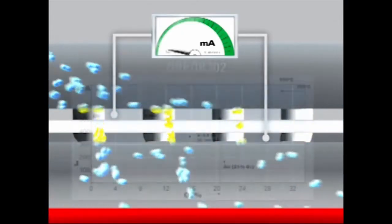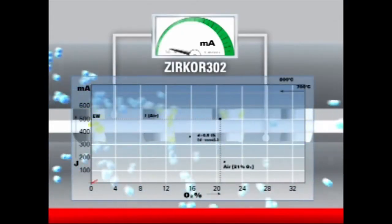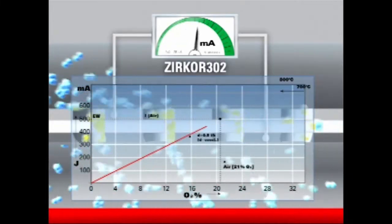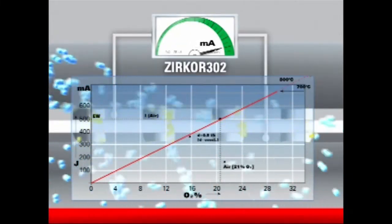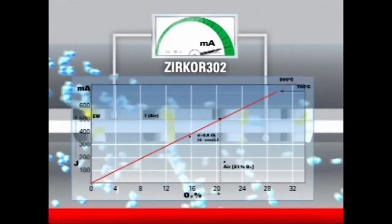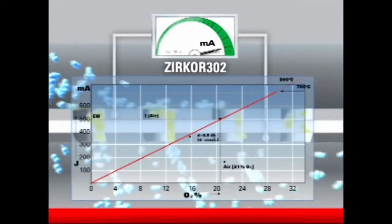Current combined with a physically fixed zero point means a one point calibration with air is sufficient. Special test gas essential for the voltage probe is not required for the Circor 302.